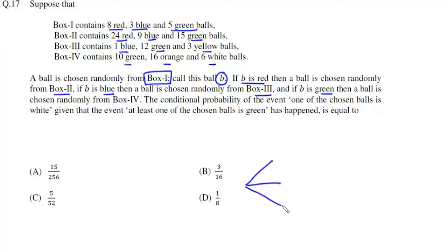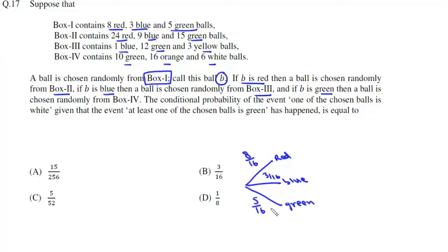A ball is chosen from box 1, and it can be either red, blue, or green. Probability of choosing a red ball is 8 by 16. Probability of choosing a blue ball is 3 by 16. And probability of choosing a green ball is 5 by 16. If it is red, we choose from box 2; if blue, from box 3; and if green, from box 4.